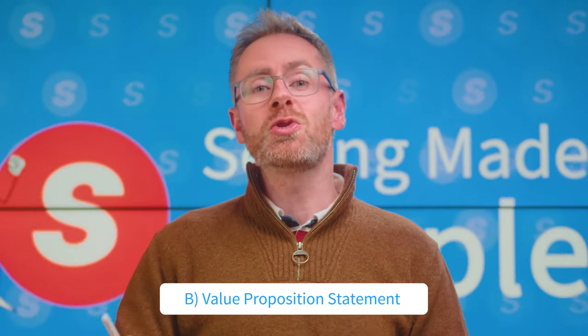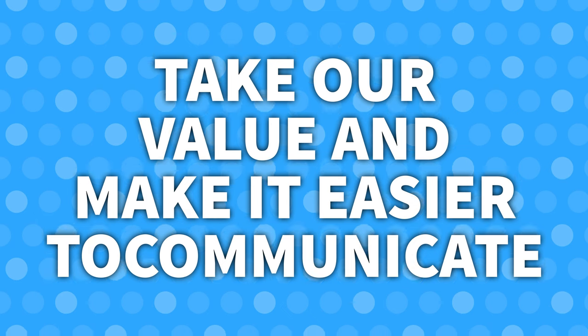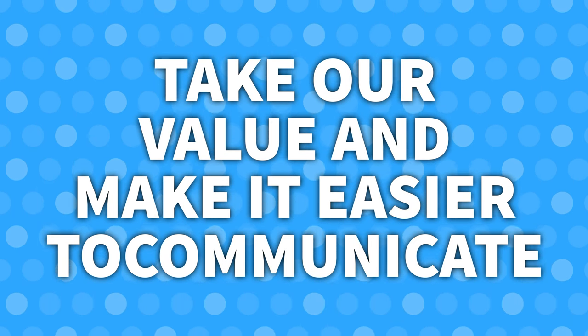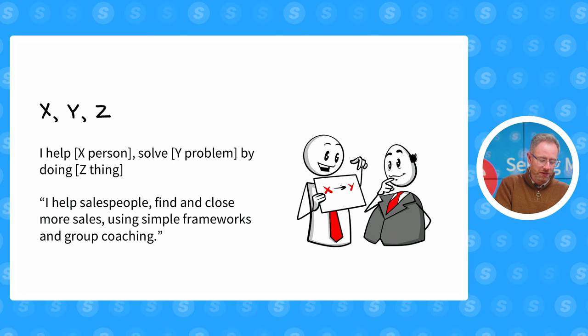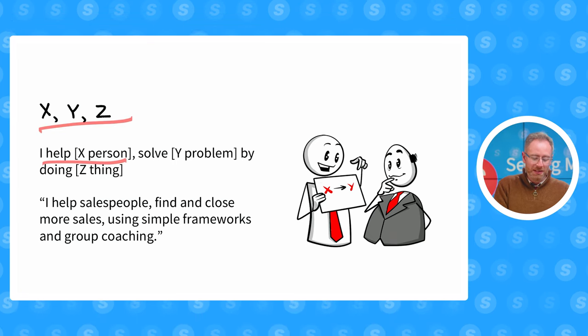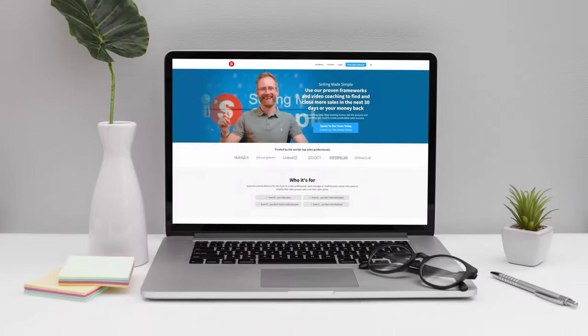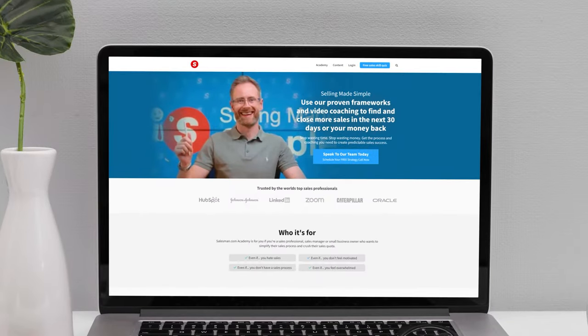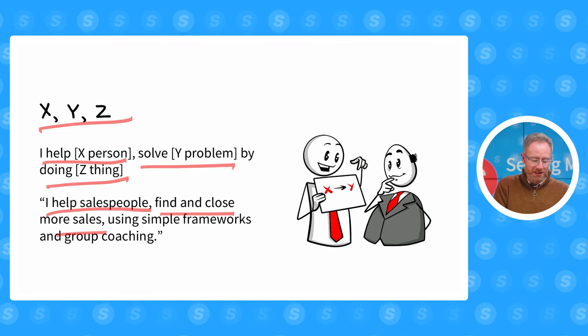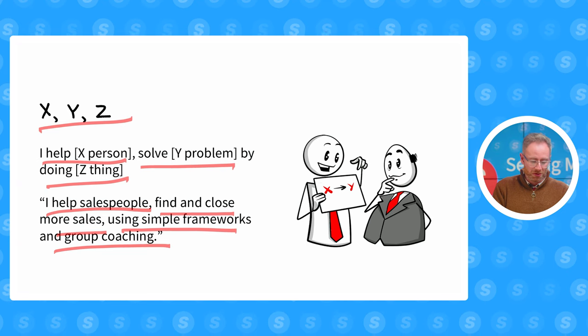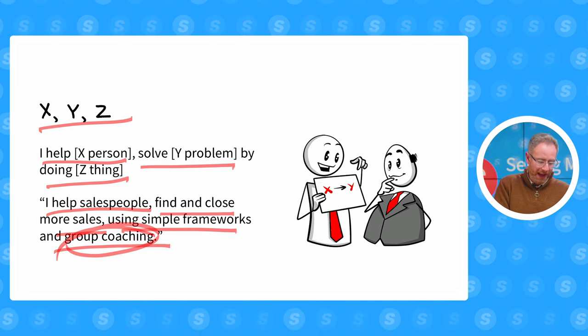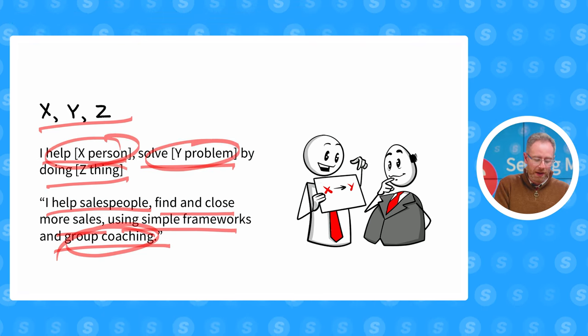Then it's time to pull some of this together and build what we call a value proposition statement. There are two ways to build it. The point is just to take the value, the products, everything we described in the first step and make it more palatable and easier to communicate. The first way is called the XYZ approach: I help X person solve Y problem by doing Z thing. So for me, selling our salesman.com academy, I say: I help salespeople find and close more sales using simple frameworks like this one and group coaching. So: I help X person solve Y problem by doing Z thing.